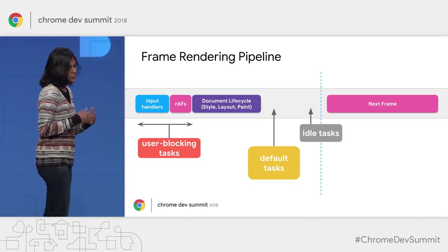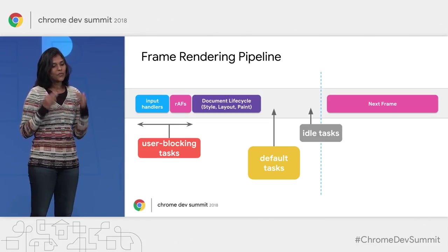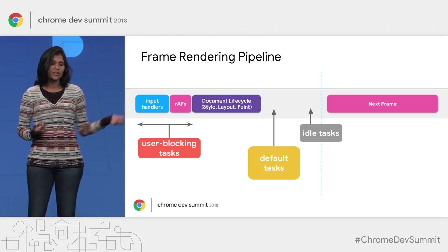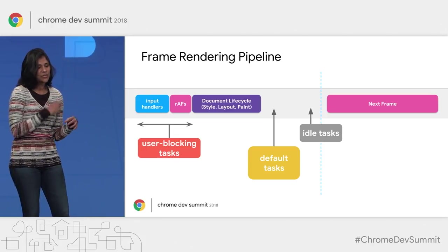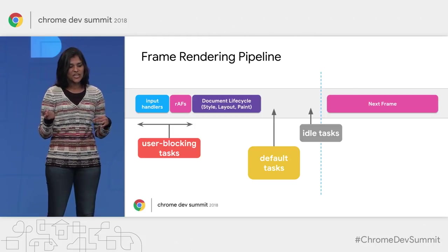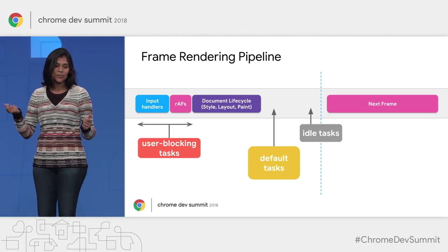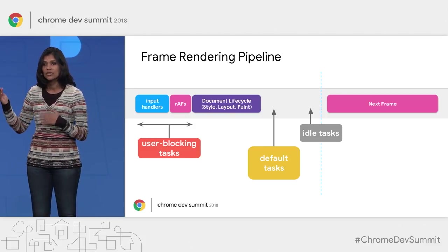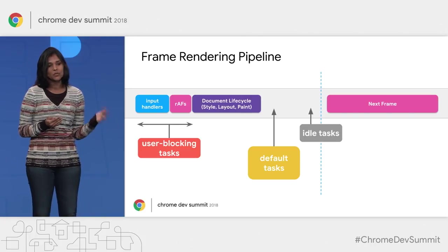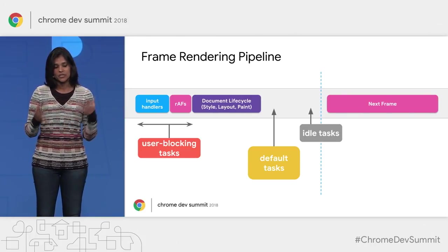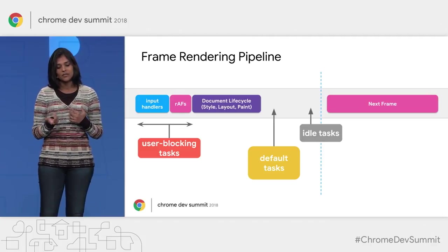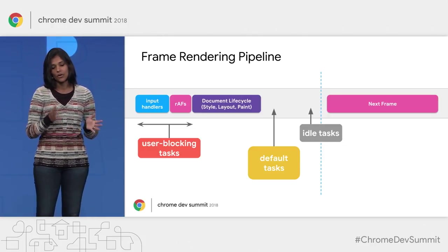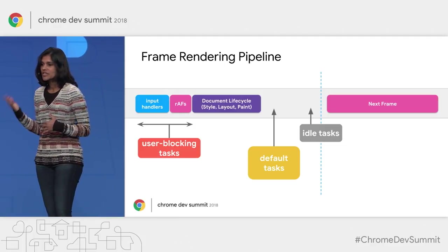We use three categories of work. User-blocking tasks for the current frame typically provide the user an immediate acknowledgement — keeping typing interactive, keeping animations going, keeping the page responsive overall. Default work is typically user-visible work that prepares for the next or a future frame — in our example, post-processing, preparing, and rendering search results in time. And finally, idle work is typically not user-visible — things like analytics, backups, syncs, or indexing, which happen at the end of a frame or when no frames are being rendered.